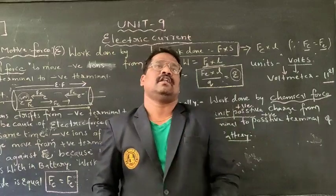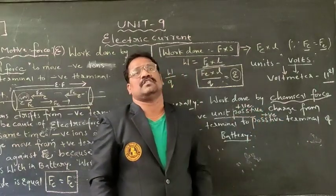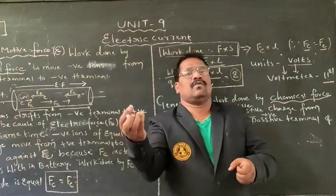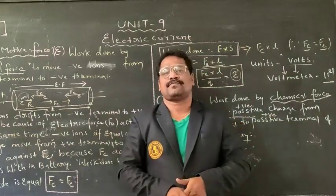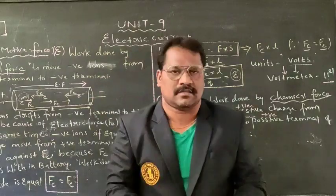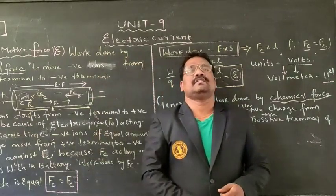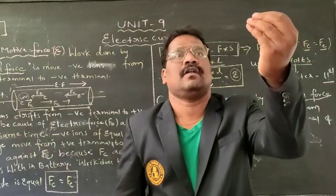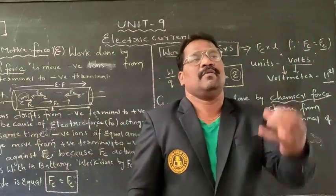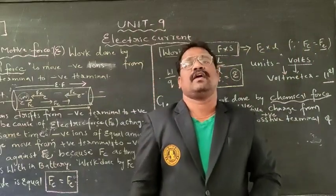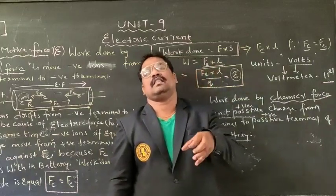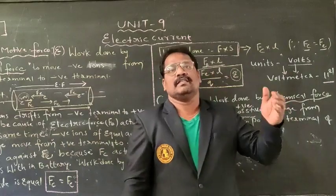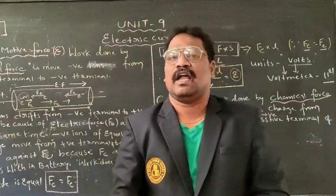Electromotive force is nothing but the energy existing in a battery. For example, if I am using a torchlight, I place batteries inside. As I switch on and continuously use it for some months, after one month what happens? As we switch on the torch, we can see that the light of that particular torch gradually decreases its intensity — it becomes very dim. By that we understand that the battery has lost its chemical energy, so the effect of chemical force is lesser, and it glows with dim light.